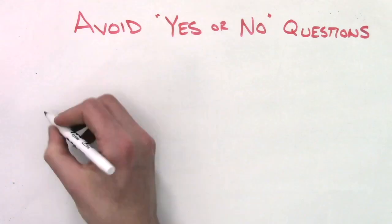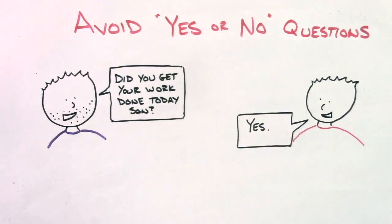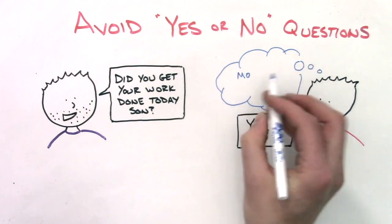Avoid asking yes or no questions like, did you get all your work done? It makes it easy for the child to reply yes, even if your child didn't get the work done.